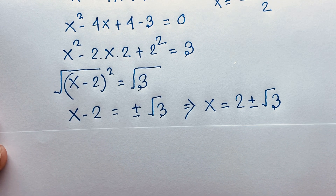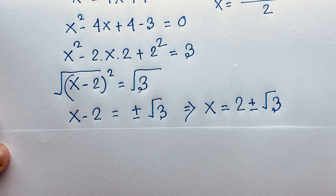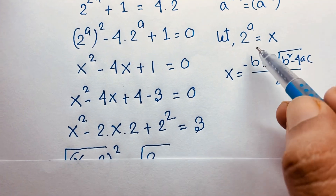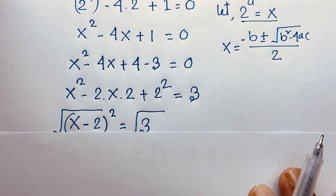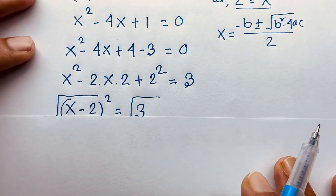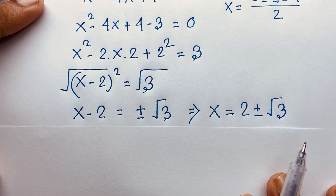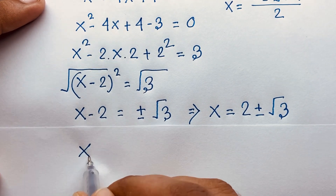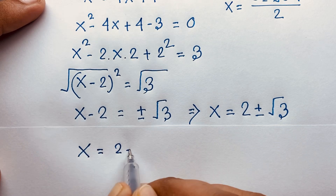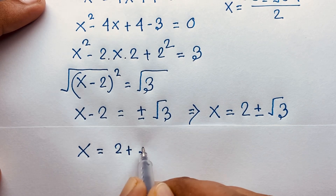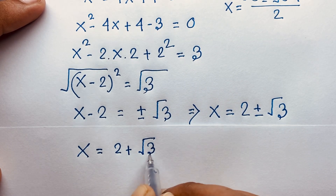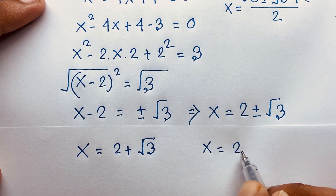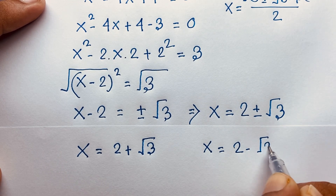Remember that x equals 2 to the power a. Substituting back: x equals 2 plus square root 3, and x equals 2 minus square root 3.